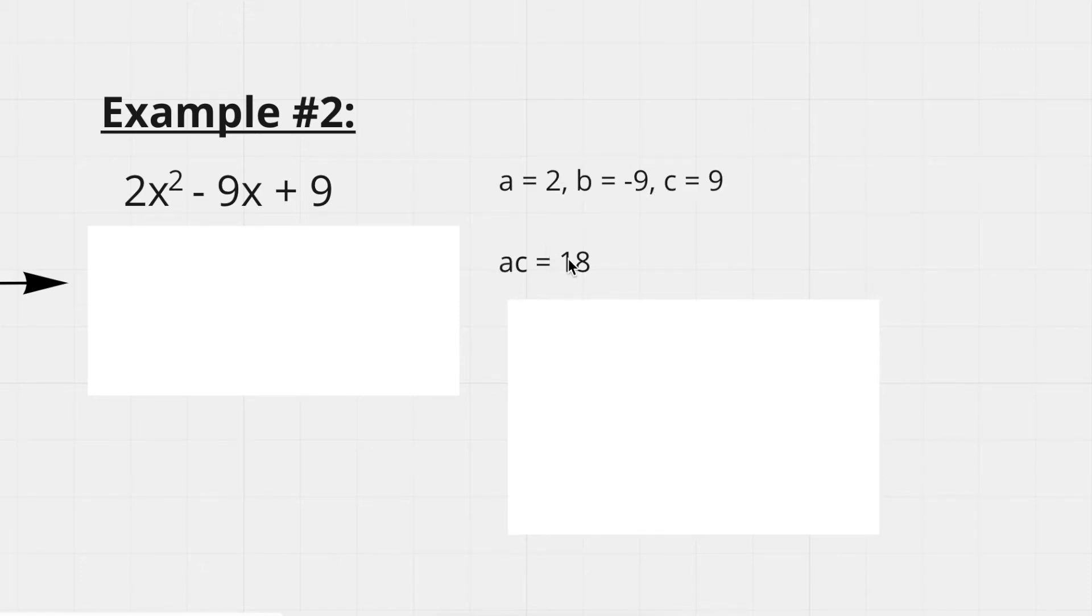And I also wrote the ac value again, which is 18. So this means we need two numbers that multiply to give you 18, and they should add to negative 9. Again, if you'd like to pause the video and try to figure out what numbers those are, go ahead.